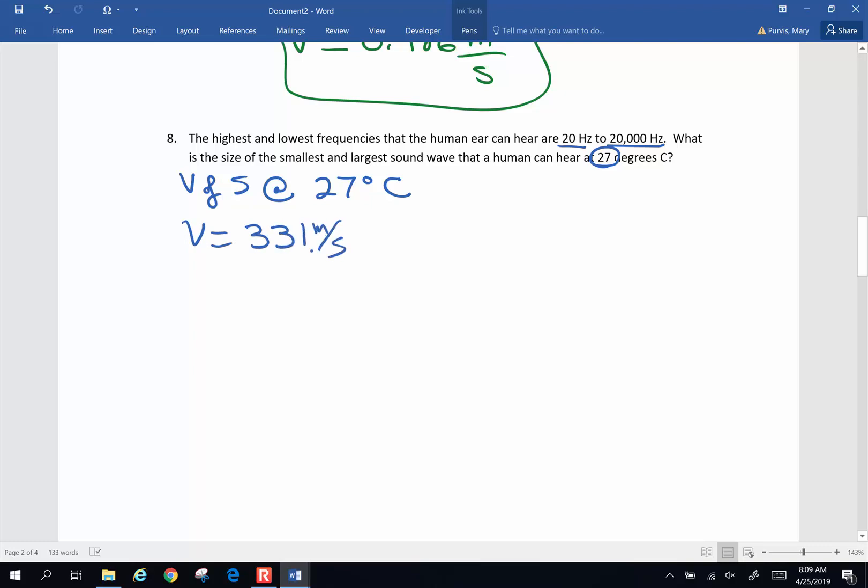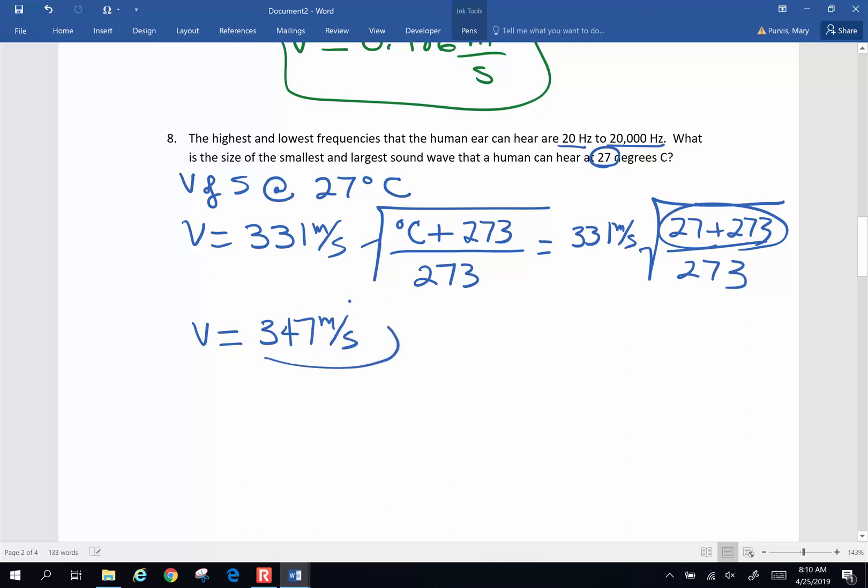So our equation for velocity of sound is the velocity of sound is 331 meters per second, the speed of sound at zero, times the square root of the temperature in degrees Celsius plus 273 to convert it into Kelvin divided by 273. So if I put the numbers in there, 331 times the square root of 27 plus 273 divided by 273. Make sure you do the order of operations. You must add, then you divide, then you square root, then you multiply. Order is very important here. You end up with a velocity of 347 meters per second is the velocity of sound on this particular day under those temperature situations.